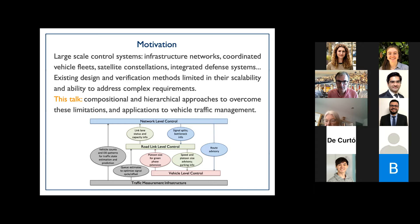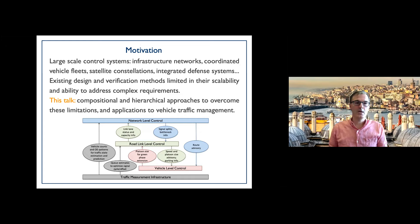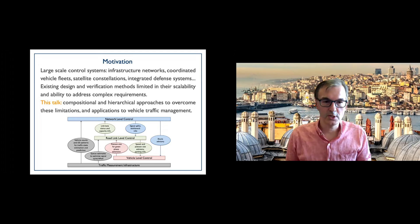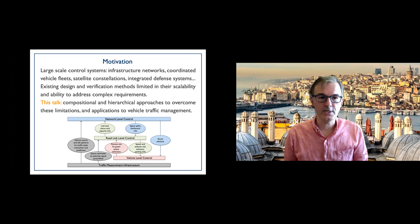The traditional design and verification methods we have in control theory are rather limited in how far they can scale to large systems. Furthermore, early results deal with trying to verify properties such as stability, tracking, and some forms of performance, but not the more complex requirements we are encountering today. In this talk I'll try to convince you that compositional and hierarchical approaches help us overcome these limitations, at least mitigate them.